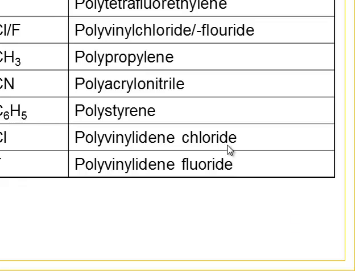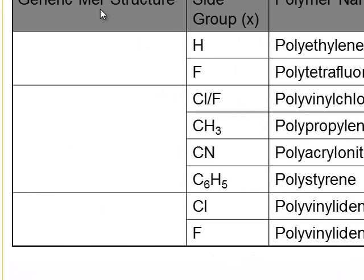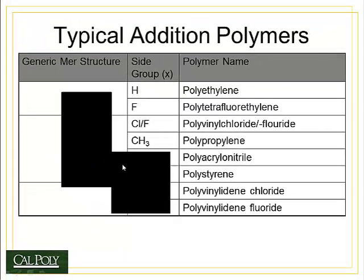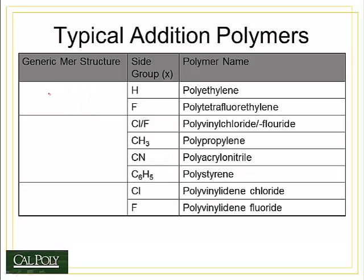Looking at common vinyl structures formed by addition polymerization: for side groups that are just atoms, such as in polyethylene and polytetrafluoroethylene, the mer structure involves carbon-to-carbon with unbonded positions on either side, represented here as R for the reaction group. Each R would be replaced by a hydrogen atom in the case of polyethylene, or a fluorine atom in the case of polytetrafluoroethylene.